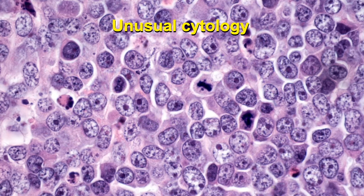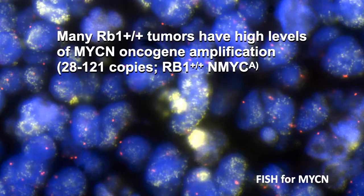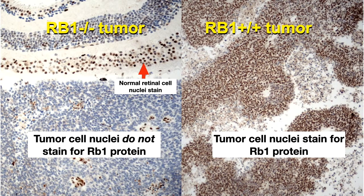This shows the cytology — the round or oval nuclei with prominent nucleoli — in a case we saw a few years ago. We can compare an RB1−/− tumor on the left with an RB1++ tumor on the right. Interestingly, RB1++ tumors seem to be driven by amplification of the MYCN oncogene. The tumor cell nuclei in RB1++ tumors retain RB1 protein, so they stain with immunohistochemical stains, compared to RB1−/− tumors which show no nuclear staining.